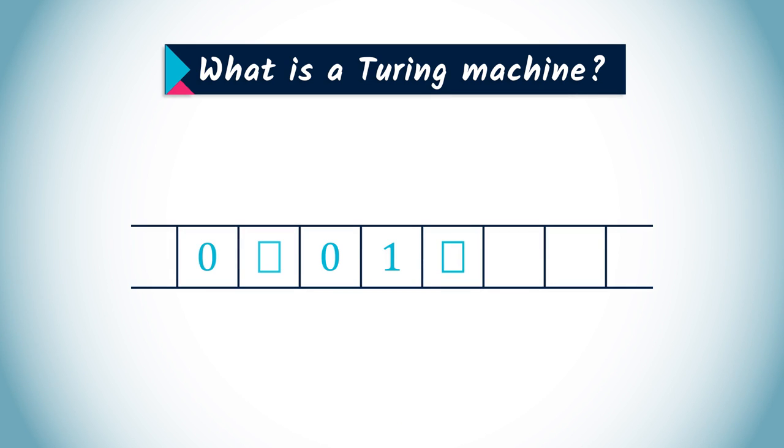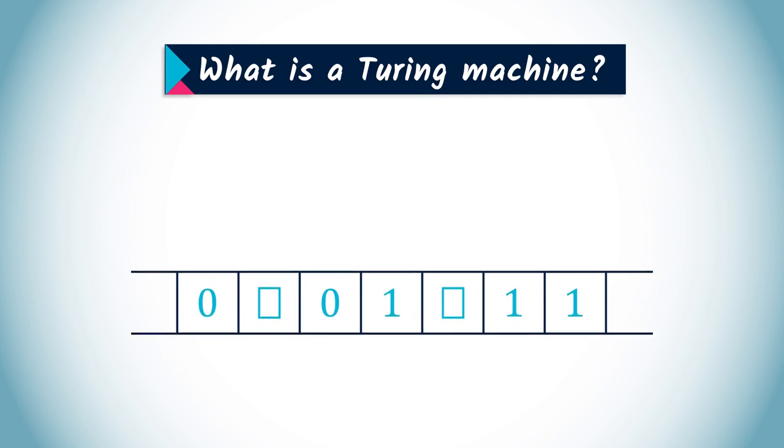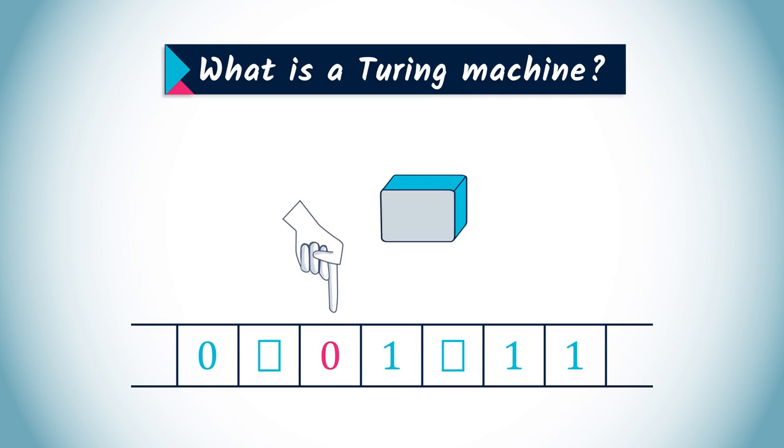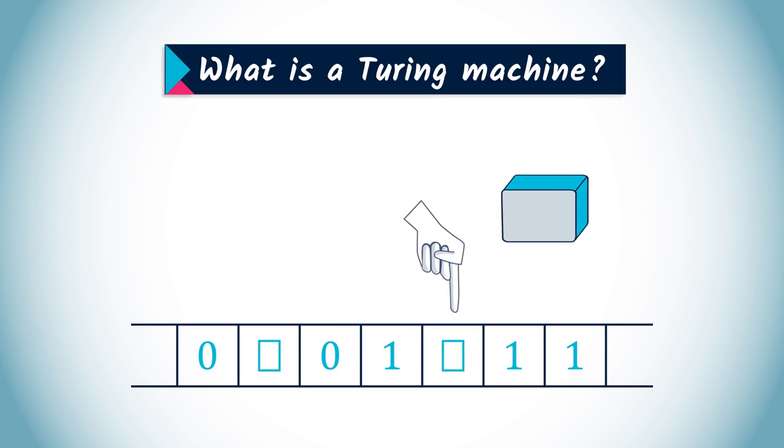The machine is able to read and write the content of any cell, but only one at a time. You can imagine it as a finger moving along the tape.